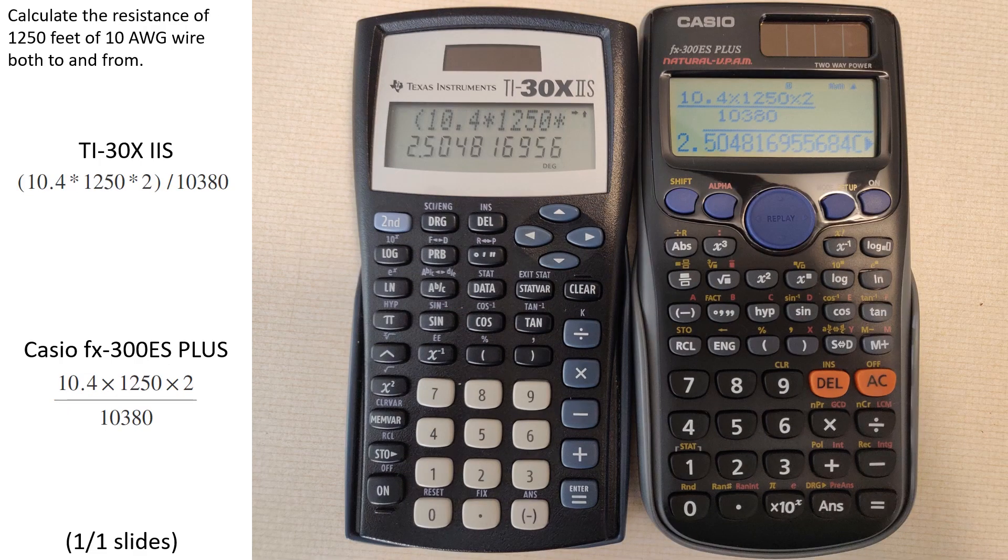This formula is used to deduce the resistance of a length of wire. Notice how parentheses must be used on the Casio calculator in order to get the correct output.